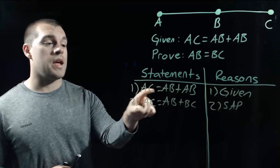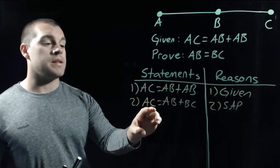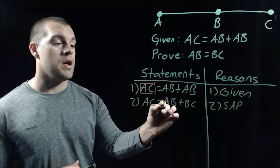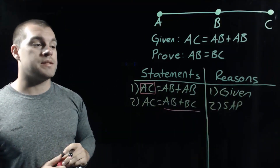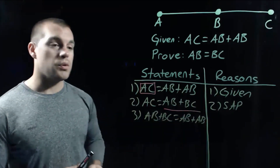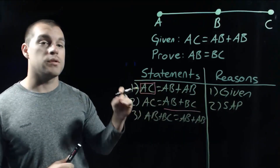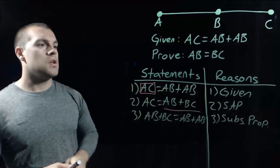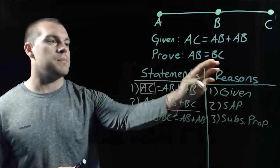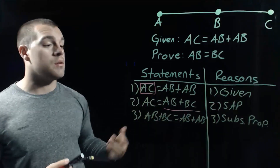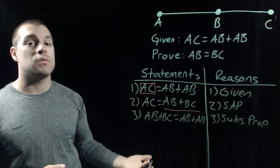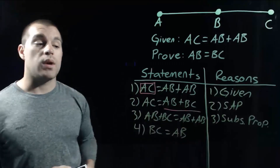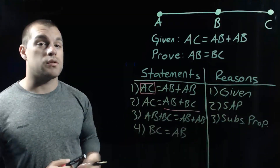If we look, earlier we said AC was equal to AB plus AB, and now we just said AC is equal to AB plus BC. So I'm going to do some substitution — I'll replace AC with AB plus BC. That gives us the statement AB plus BC equals AB plus AB, using our substitution property. Now we've got extra copies of AB, so we can use our subtraction property to subtract AB from both sides. Then we end up with the statement that BC equals AB, using our subtraction property.